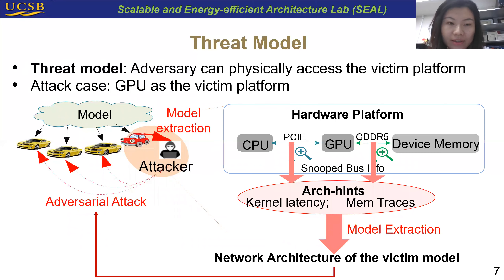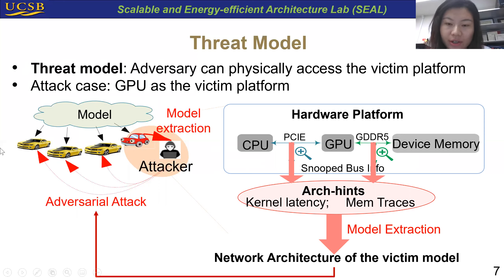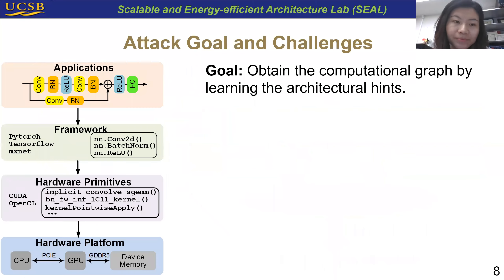We targeted GPU platforms which have great impact on the deep learning ecosystem. The architecture hints we leverage here are the bus events across the PCIe and GDDR5 buses, including both the memory traces and the kernel execution latency. The basic attack goal is to obtain the computational graph by learning the architecture hints.